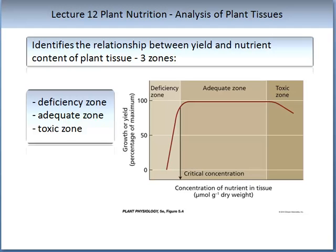The second zone is called the adequate zone, where plants are able to grow to adequate yield. The third zone is the toxic zone, where too many nutrients have caused deleterious effects on growth and yield. It is important to understand not only these zones, but also the economic components. If you apply too many nutrients and you are in the adequate zone, you could be wasting nutrients. If you don't apply enough, you are wasting your economic potential by reducing yield.